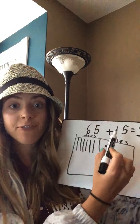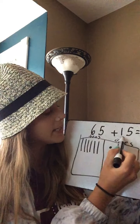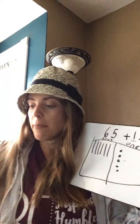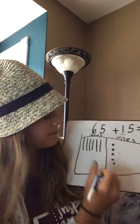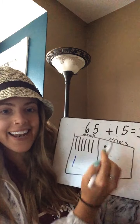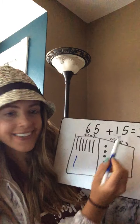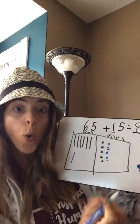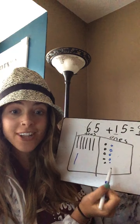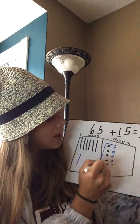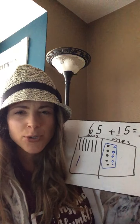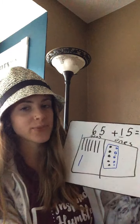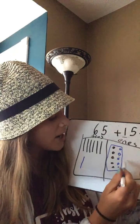Now we're gonna add in 15. How many tens? One — and I'm gonna color code this time, I found the blue marker, it was hiding. One ten. And how many ones? Five: one, two, three, four, five. Look at that — we filled up our tens frame! That's what it's called. So we filled up our tens frame.